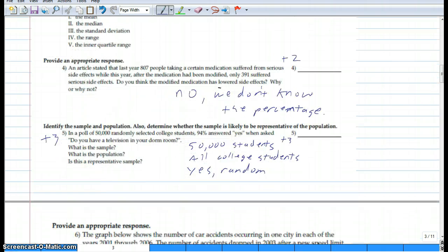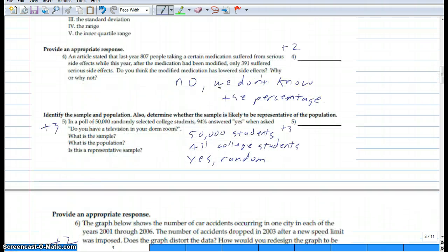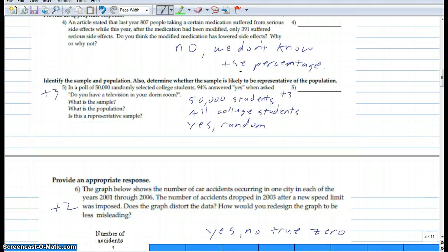Four was a little tricky. The wording on this is not great but a lot of people did get it. If 807 people took a medication and suffered side effects, the next year 391 suffered - we don't know how many people actually took the medicine in either year. We really don't know because we need to know the total number that took it and compare those percentages or ratios.